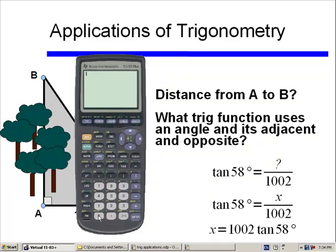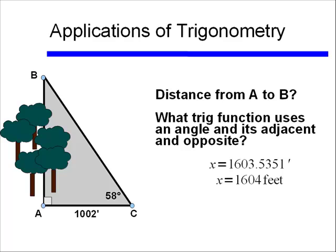And now we'll simply type in 1002 times tangent of 58. And we find the answer to be 1,603.5352, approximately. Or if we round to the nearest foot, we have 1,604 feet.